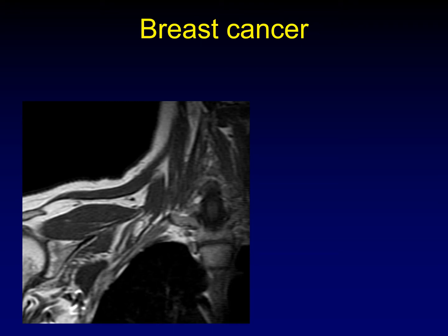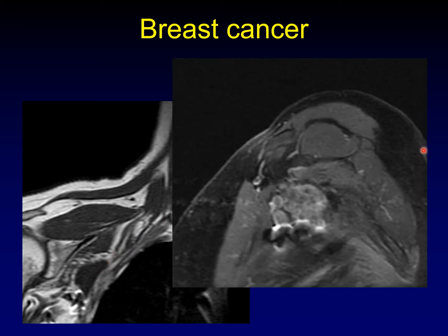Another example of breast cancer: starting with the T1-weighted unenhanced image, this is a large lymph node. You can see clips from a prior lymphadenectomy, but they missed one — this one has come back as an enlarging lymph node right along the expected path of the brachial plexus. On sagittal post-contrast, with some field distortion from the clips, there is a large recurrence right along the expected course of the distal brachial plexus, getting into the cords and branches.